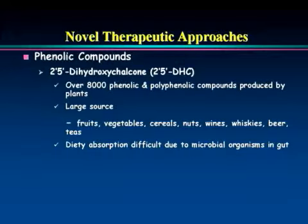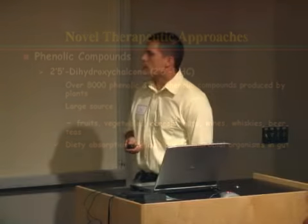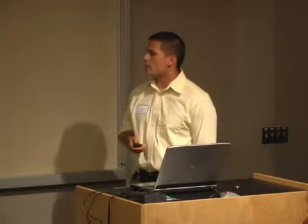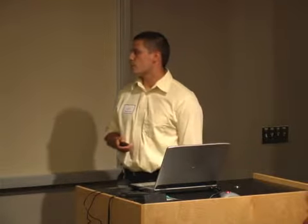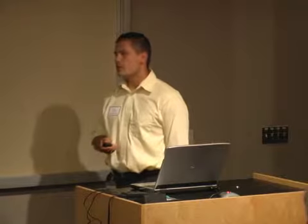We'd also like to increase glutathione through phenolic compounds. There are over 8,000 phenolic and polyphenolic compounds produced by plants, with large sources found in fruits, vegetables, cereals, nuts, red wines, whiskeys, beers, and teas.